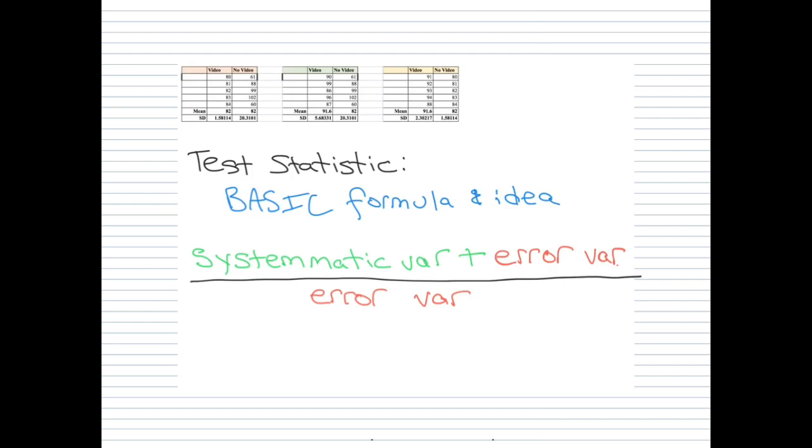The basic idea behind a test statistic is this formula that you will find in just about any textbook or lecture on statistics hypothesis testing, and that's systematic variance plus error variance over error variance. So what does that mean?